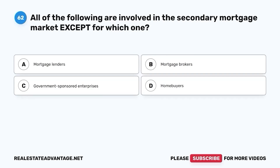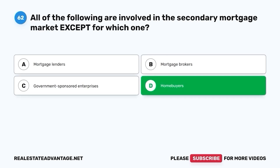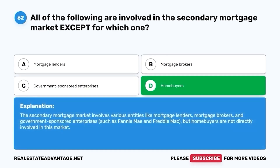Question 62. All of the following are involved in the secondary mortgage market, except for which one? A. Mortgage lenders. B. Mortgage brokers. C. Government-sponsored enterprises. D. Homebuyers. The correct answer is D. Homebuyers. The secondary mortgage market involves various entities like mortgage lenders, mortgage brokers, and government-sponsored enterprises such as Fannie Mae and Freddie Mac, but homebuyers are not directly involved in this market.